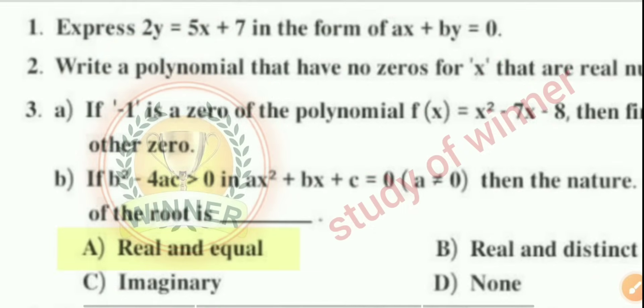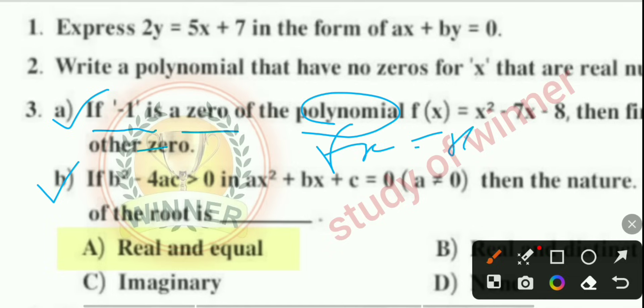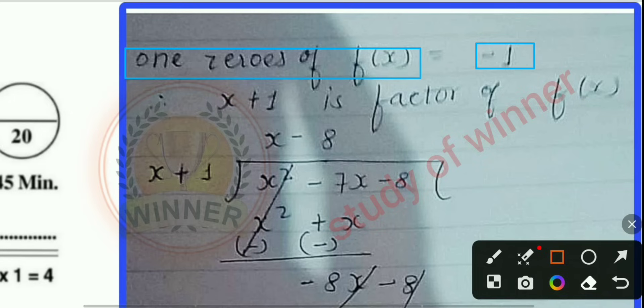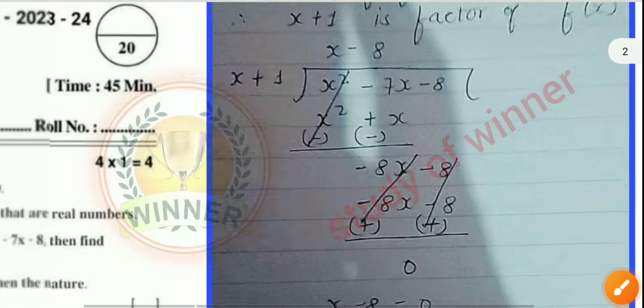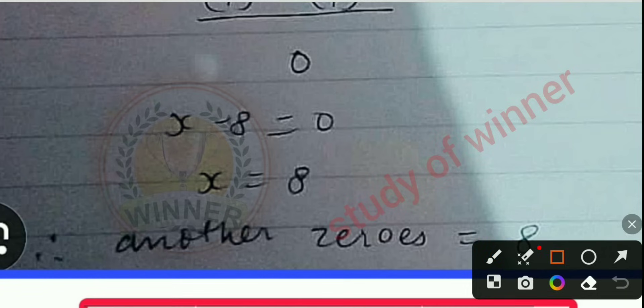Question 3a: if -1 is a zero of polynomial f(x) = x² - 7x - 8, find the other zero. The answer: since one zero of f(x) is -1, (x + 1) is a factor of f(x). After division, the other zero is 8.